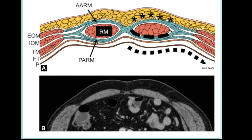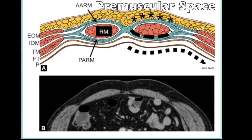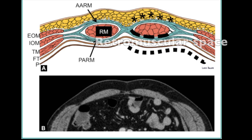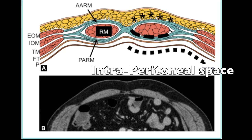Here is the abdominal wall anatomy. The drawing shows relevant abdominal wall relationships with surgical mesh. EOM is external oblique muscle, IOM is internal oblique muscle, AARM is anterior aponeurosis of the rectus muscle, PARM is the posterior aponeurosis, RM is rectus muscle, TM is transverse muscle, FT is fascia transversalis, and P is peritoneum. The asterisks highlight the pre-muscular space, or onlay, between the skin and AARM — in contrast to the retromuscular space, or sublay, between the rectus muscle and PARM. The intraperitoneal space, or underlay, is between the greater omentum and peritoneum.